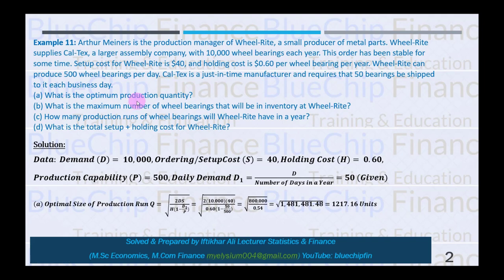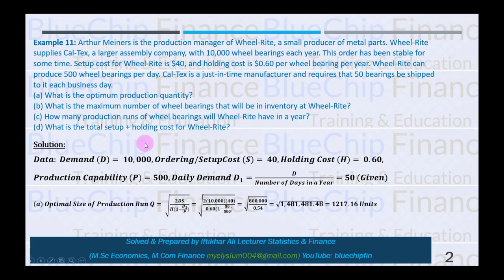The questions are: What is the optimum production quantity? What is the maximum number of wheel bearings that will be in inventory at Wheelwright? How many production runs of wheel bearings will Wheelwright have in a year? And what is the total setup plus holding cost?